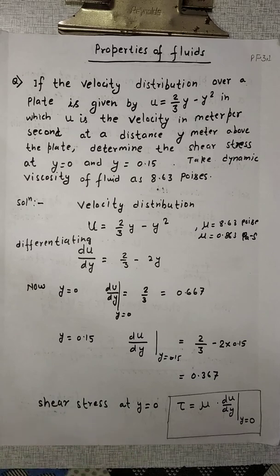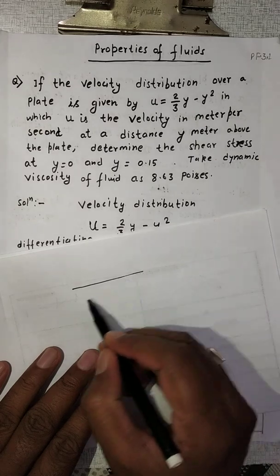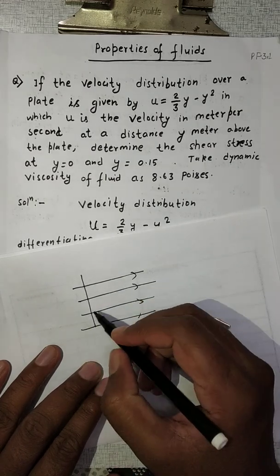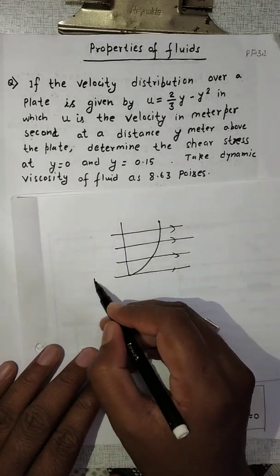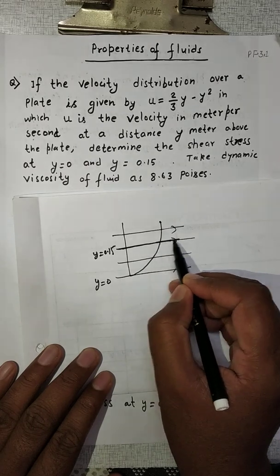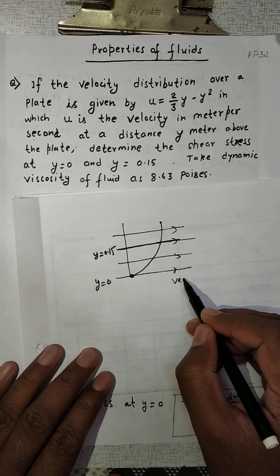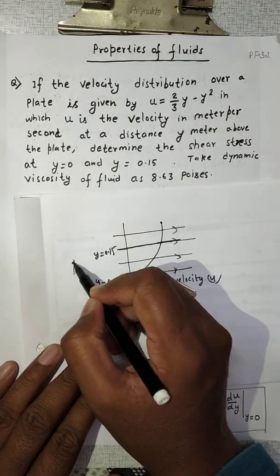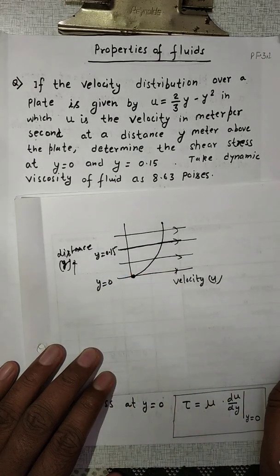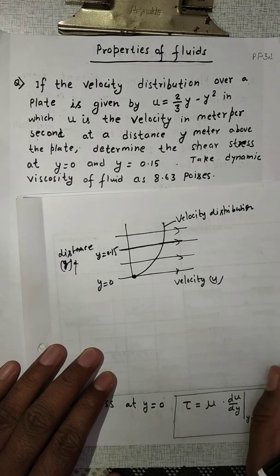Take the dynamic viscosity of the fluid as 8.63 poise. Here it is given that this is the velocity distribution of the fluid — fluid flowing in layers — and this is the velocity profile. So this is y = 0 and this is y = 0.15. We have to determine the shear stress at these points. This is the velocity u and here this is the distance y — this is the velocity distribution in fluid flow.